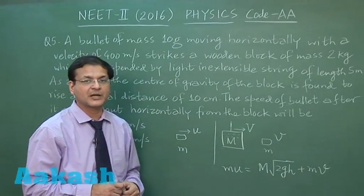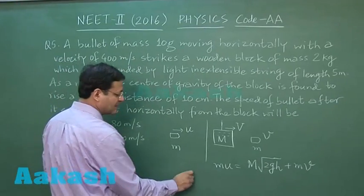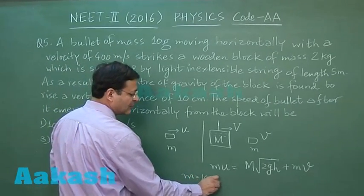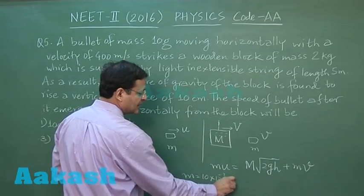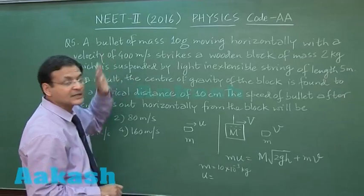So this capital V you are supposed to calculate. If you substitute here, you see the value of m has been given as 10 grams, so you have to take it as 10 × 10⁻³ kg. The value of u has been given as 400 meters per second.